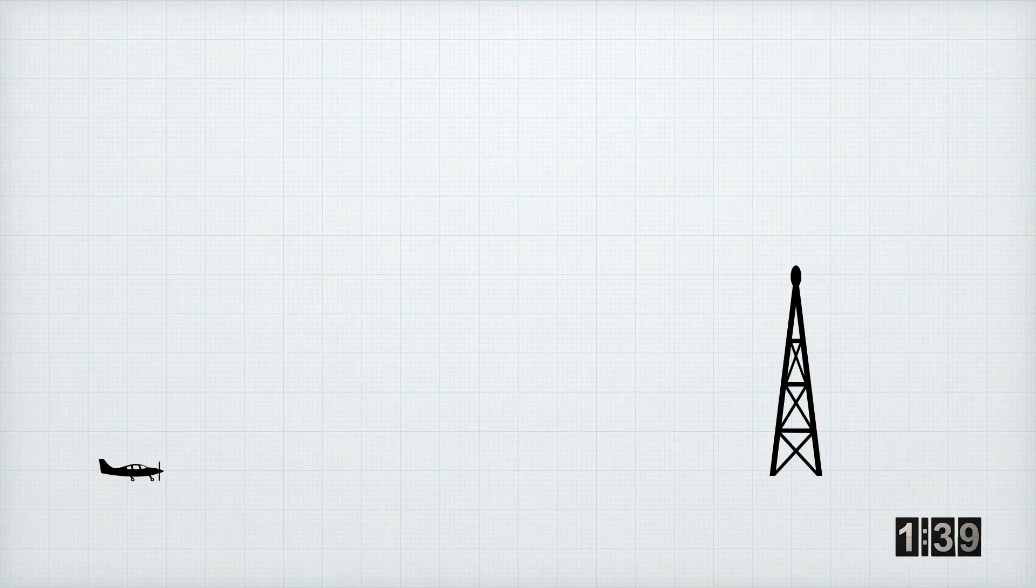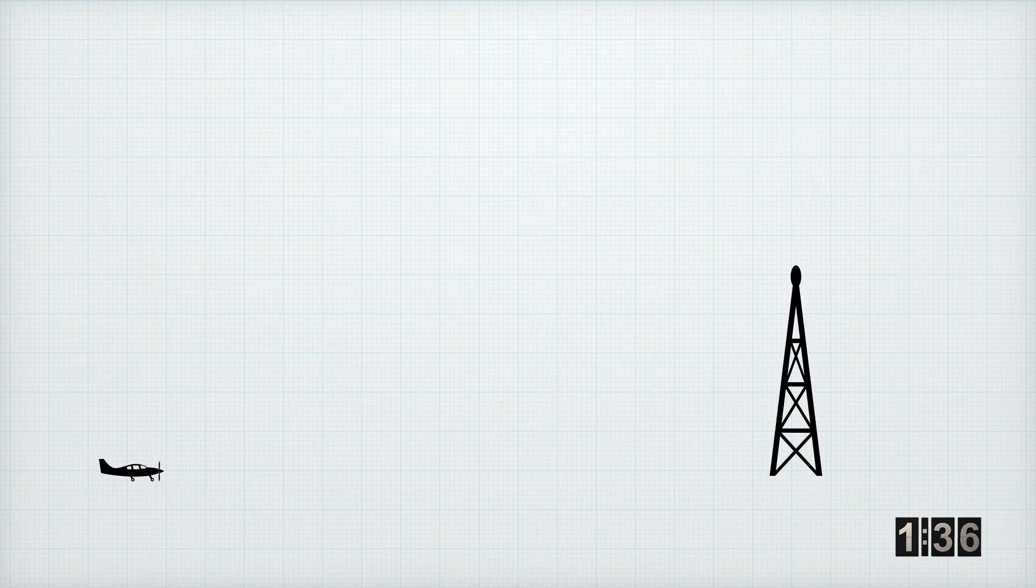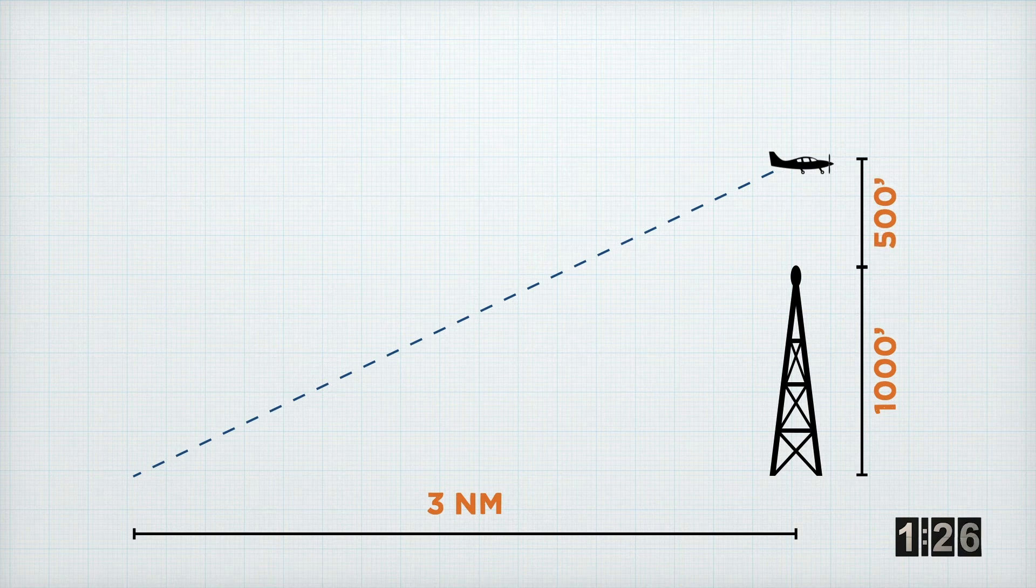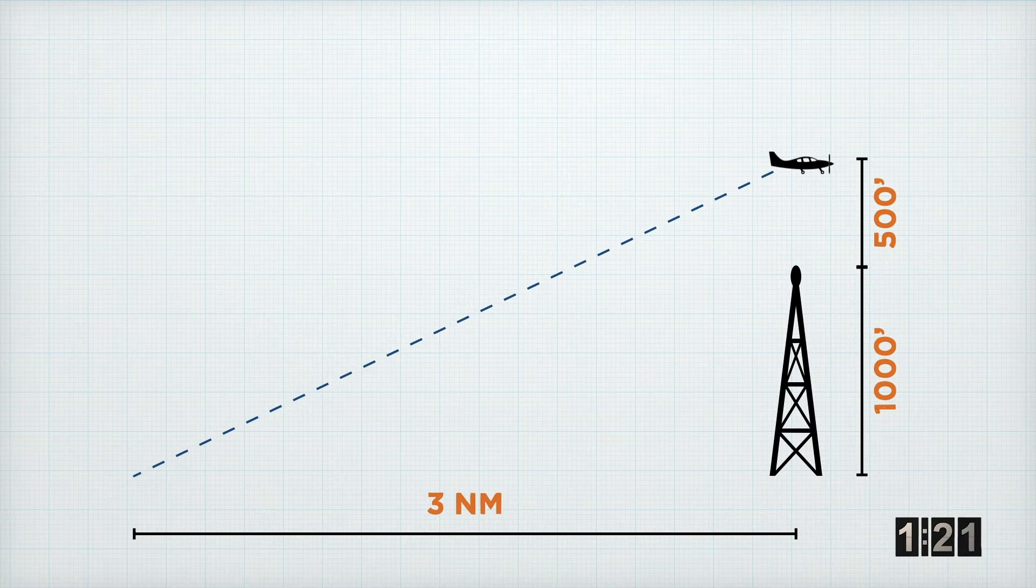So let's look at a real world example. Let's say you're about to depart an airport, but three nautical miles away from the end of the runway, there's a radio mast that's a thousand feet tall. And by the time you get to the radio mast, you've got to be 500 feet above it. So you want to know what the minimum flight path angle is that you need to achieve in order to guarantee your obstacle clearance.